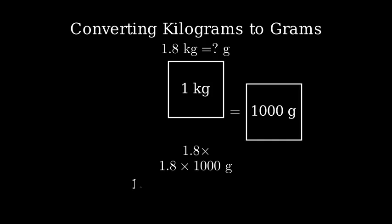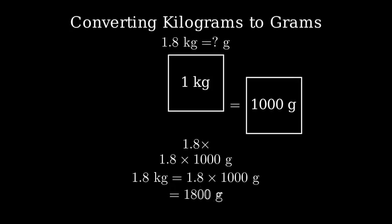Let's solve this step by step. First, let's write out what we're calculating. 1.8 kilograms equals 1.8 times 1000 grams. Now let's multiply. 1.8 times 1000 equals 1800.